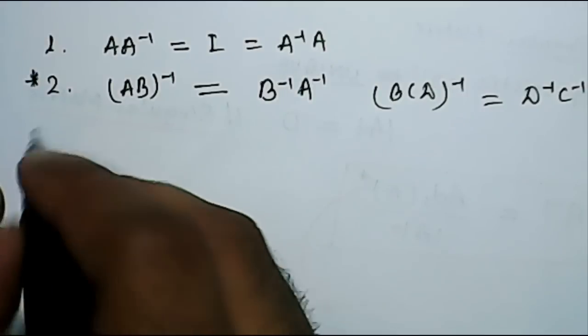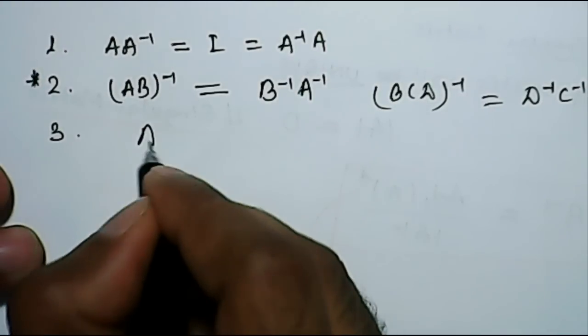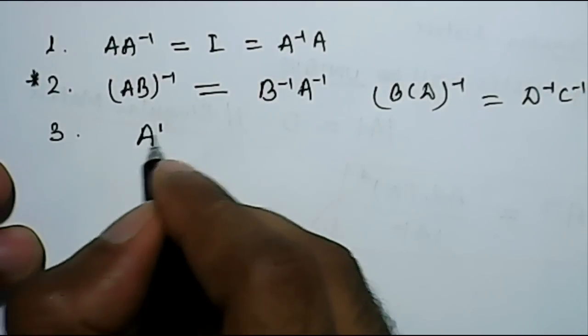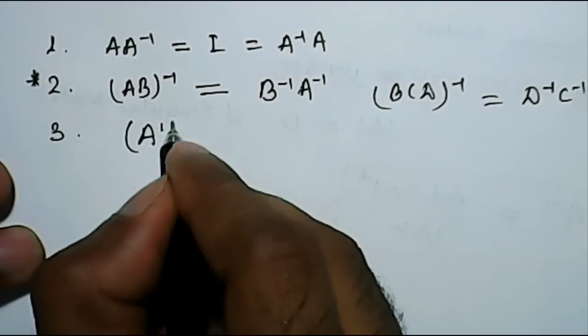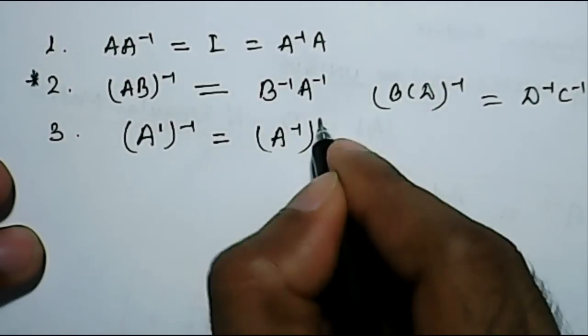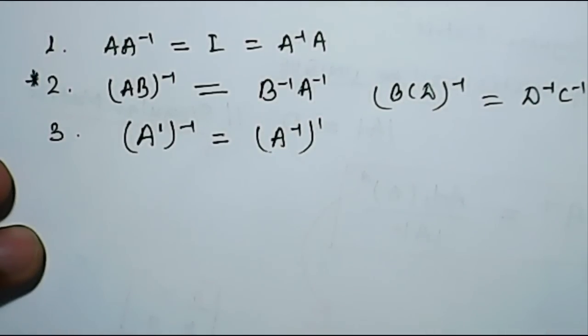Now, you can have one more important property. If you have A transpose and then inverse of it, it will be equal to inverse of it and then taking transpose.